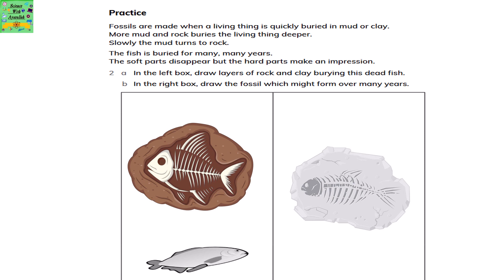Fossils are made when a living thing is quickly buried in mud or clay. More mud and rocks bury the living thing deeper. Slowly the mud turns to rock. The fish is buried for many many years. The soft parts disappear but the hard parts make an impression. In the left box, draw layers of rock and clay burying this dead fish. In the right box, draw the fossil which might form over many years.